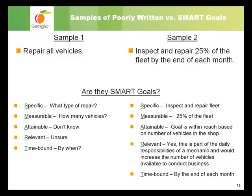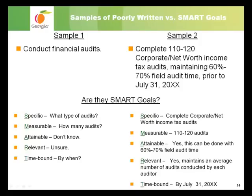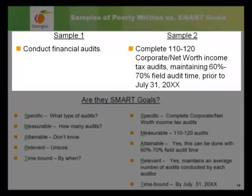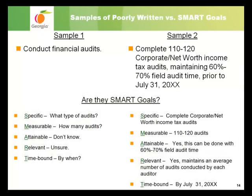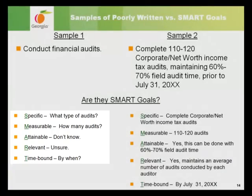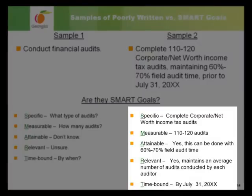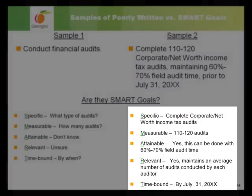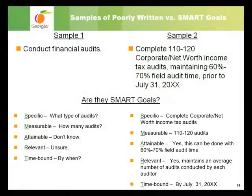Here are some sample goals for an auditor-examiner position in the Department of Revenue. The first example is 'conducts financial audits,' while the second example is 'to complete 110 to 120 corporate net worth income tax audits, maintaining 60 to 70% field audit time prior to July 31, 200X.' The first example doesn't provide enough information to be SMART — it isn't specific, measurable, or time-bound, so we can't determine if it's attainable or relevant. The second example is a SMART goal. Pause the presentation to read through the SMART criteria for the goal on the right, then continue the training.